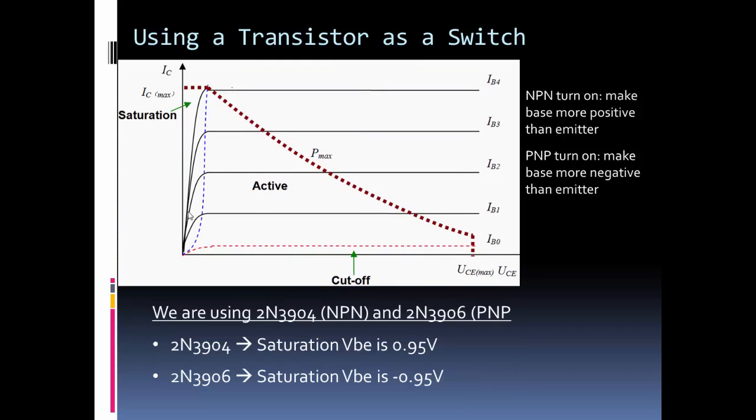And here I just want to show, this is a characteristic curve of a transistor. Now keep in mind, besides just using a transistor as a switch, one of the main things it's used for is amplifying signals. And you typically use the transistor in the active region to amplify signals.